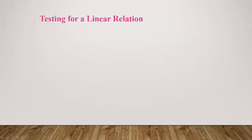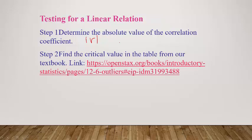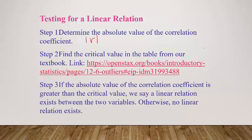The last topic is how to test for a linear relationship. What if R values are like 0.8, 0.7, or 0.6 — what's the cutoff? First, find the absolute value of the correlation coefficient — if it's negative, make it positive. Then look up the critical value in the table from the textbook. If the absolute value of R is greater than the critical value, a linear relationship exists between the two variables; otherwise, no linear relationship.